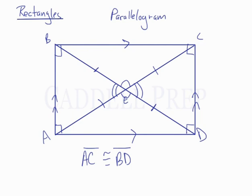So we have four isosceles triangles, and this triangle BCE is congruent to triangle AED.